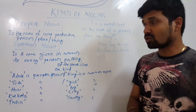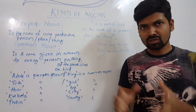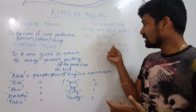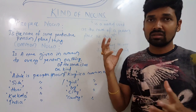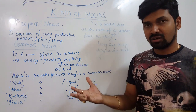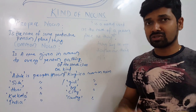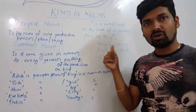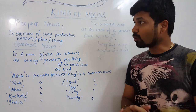A noun is a word used as the name of a person, a place, or a thing. It may be anything we can think of — a place, a person, or a thing. Today we are going to discuss the proper noun and common noun.